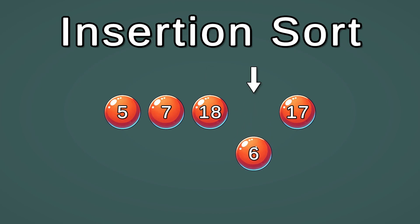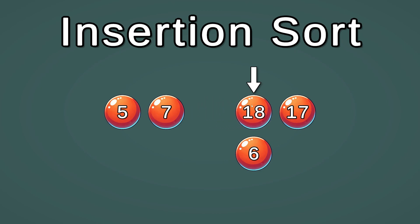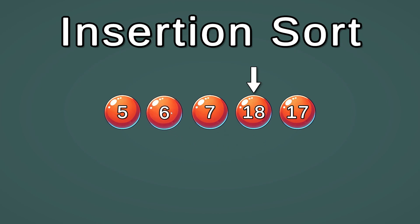So we take 6. And 6 is less than 18, so we put 18 in 6's place. Then we compare 6 with 7 — 7 is greater than 6, so we shift 7. And 6 is greater than 5, so we put 6 in place of 7.